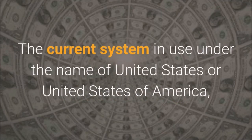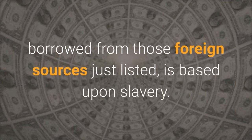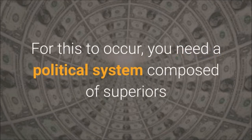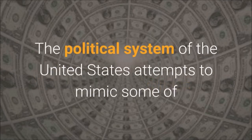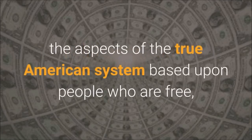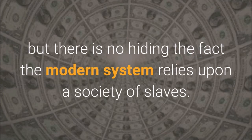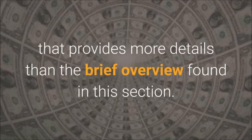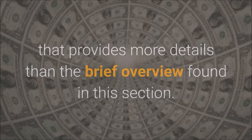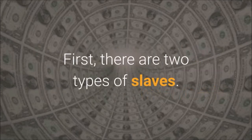The current system in use under the name of United States or United States of America, borrowed from those foreign sources just listed, is based upon slavery. For this to occur, you need a political system composed of superiors and inferiors, or masters and slaves. The political system of the United States attempts to mimic some of the aspects of the true American system based upon people who are free, but there is no hiding the fact the modern system relies upon a society of slaves. I previously wrote Treatise: A Society of Slaves and Freedmen that provides more details than the brief overview found in this section. This issue is fundamental to our understanding of how such extreme changes can be employed while escaping the awareness of most people. First, there are two types of slaves.